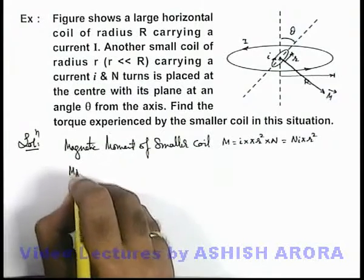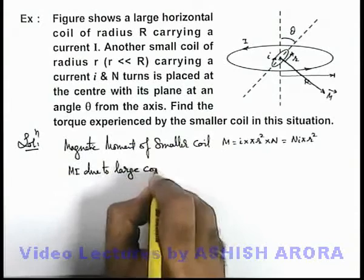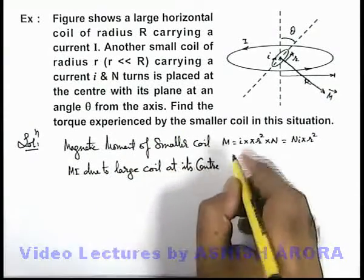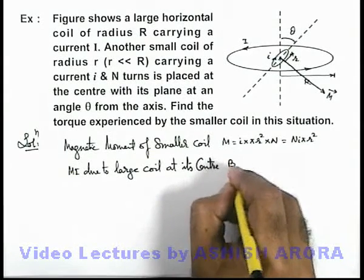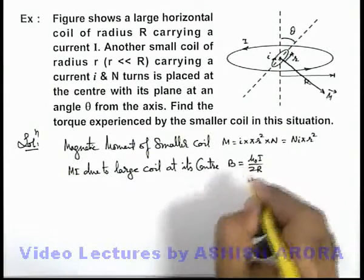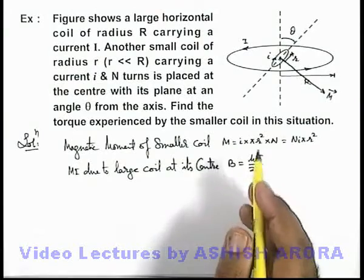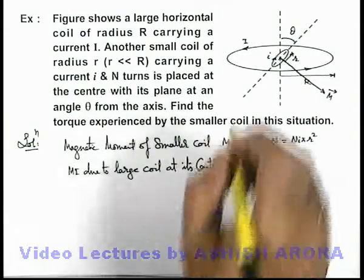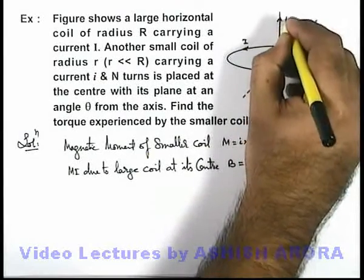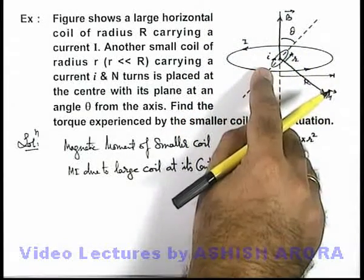Now, if we calculate the magnetic induction due to the large coil at its center, this large coil will produce a magnetic induction B given as μ₀I / 2R. This is the magnetic induction due to a circular coil at its center. The direction of this magnetic induction will be in the upward direction, that is, the B vector points upward, according to the direction of current flowing in the large coil.